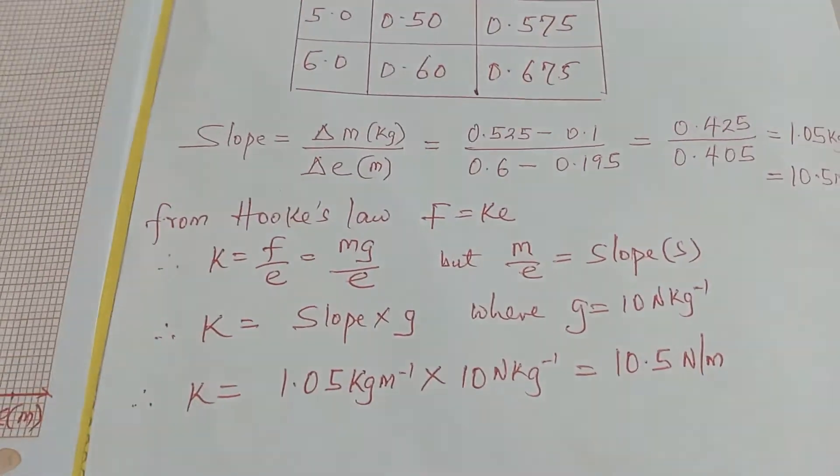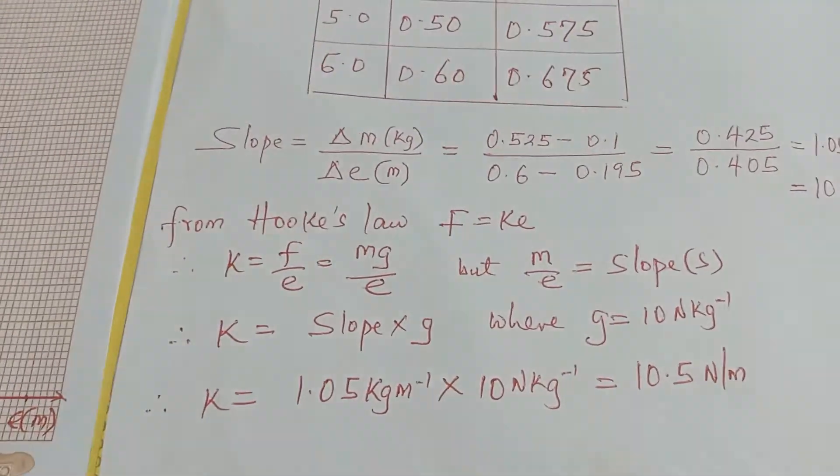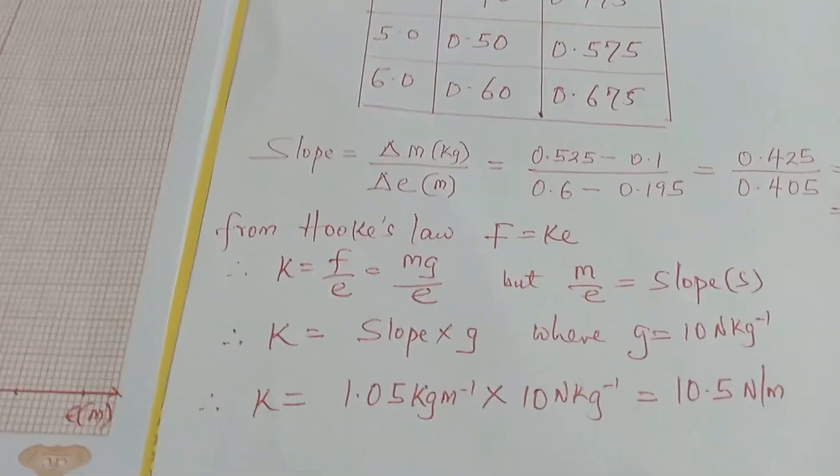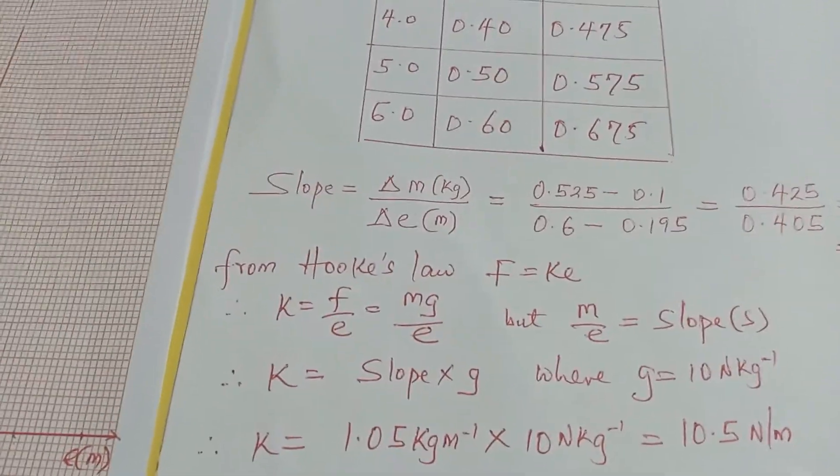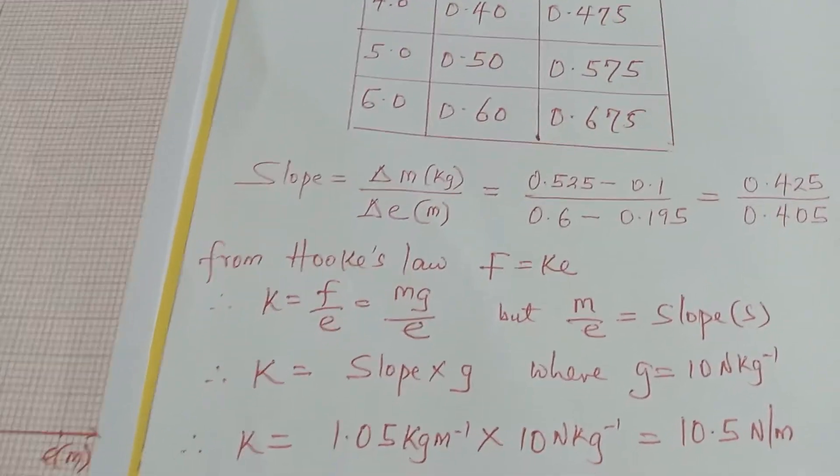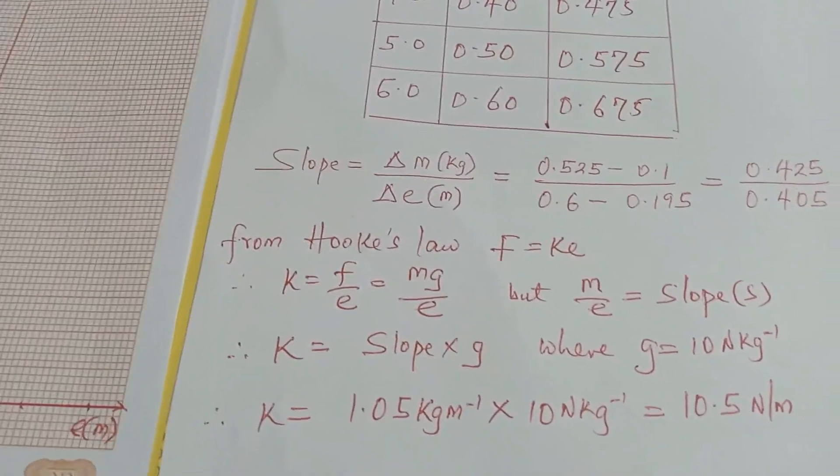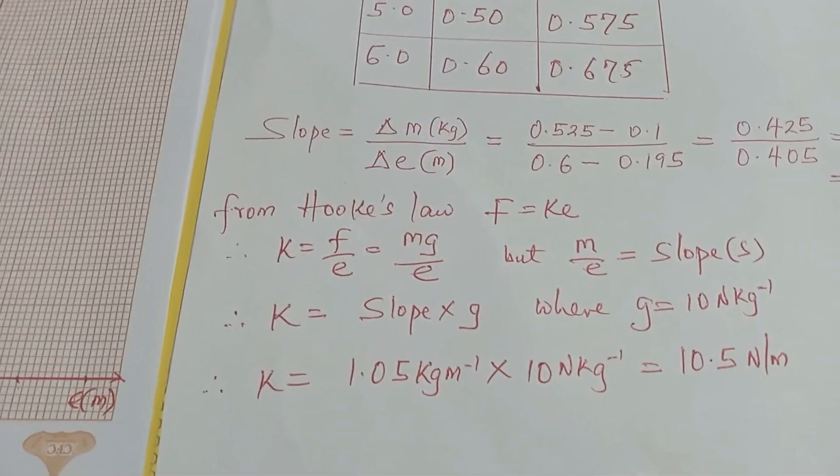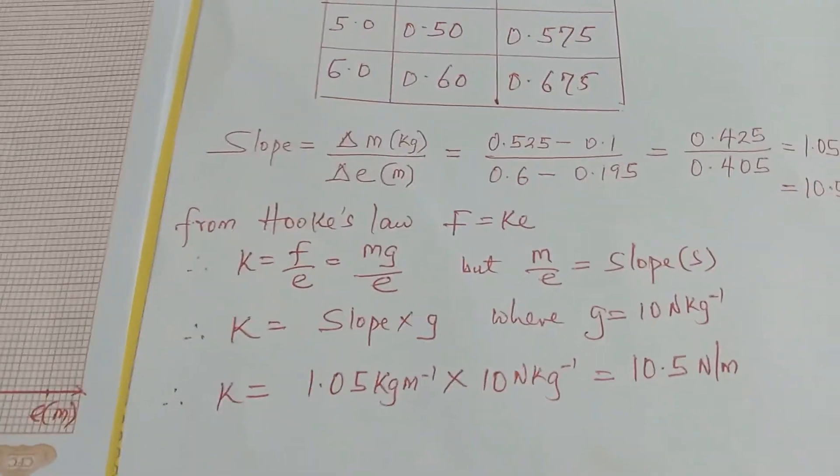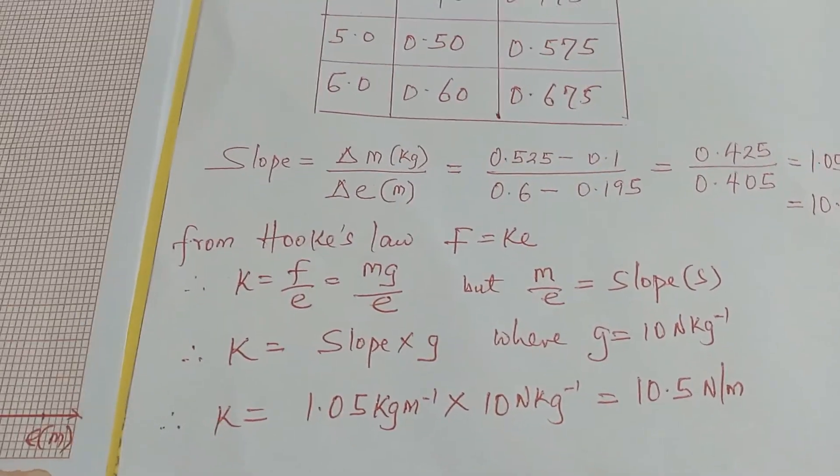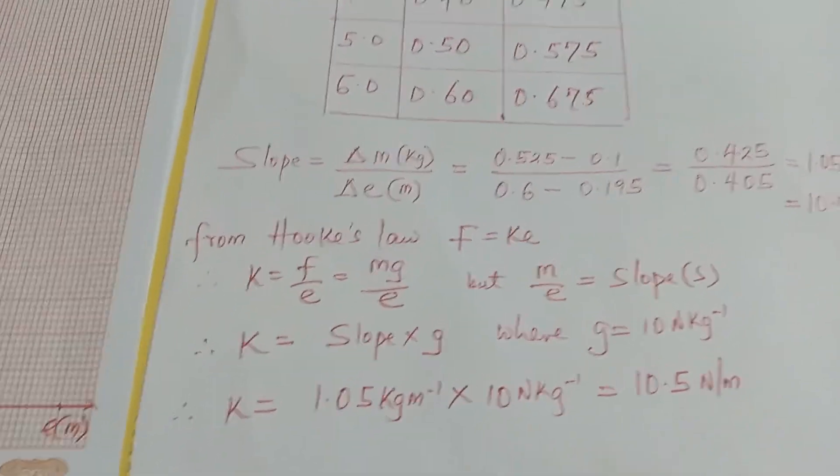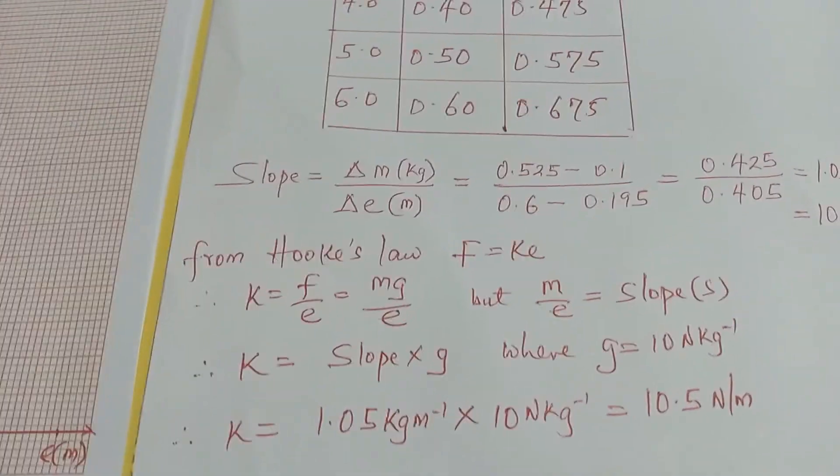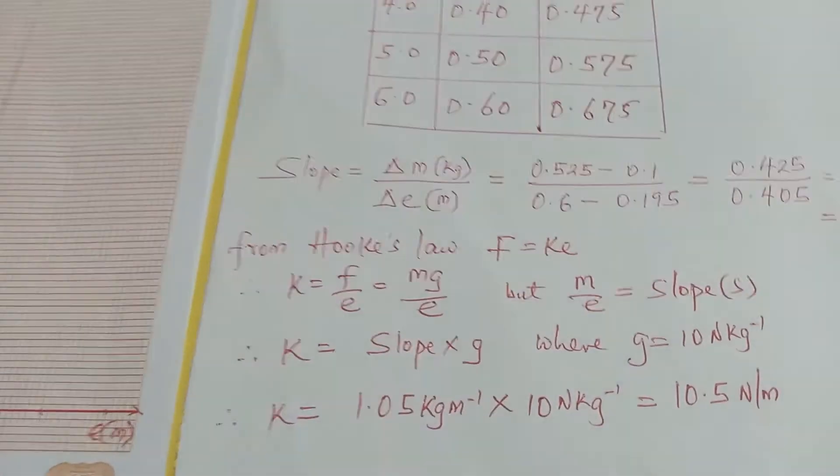I would deduce that from Hooke's law by making F subject of the formula and then substituting the value of my slope which is M over E and then multiplied by the value of g. So it means that the value of the force constant of my spring is 10.5 Newton per meters.